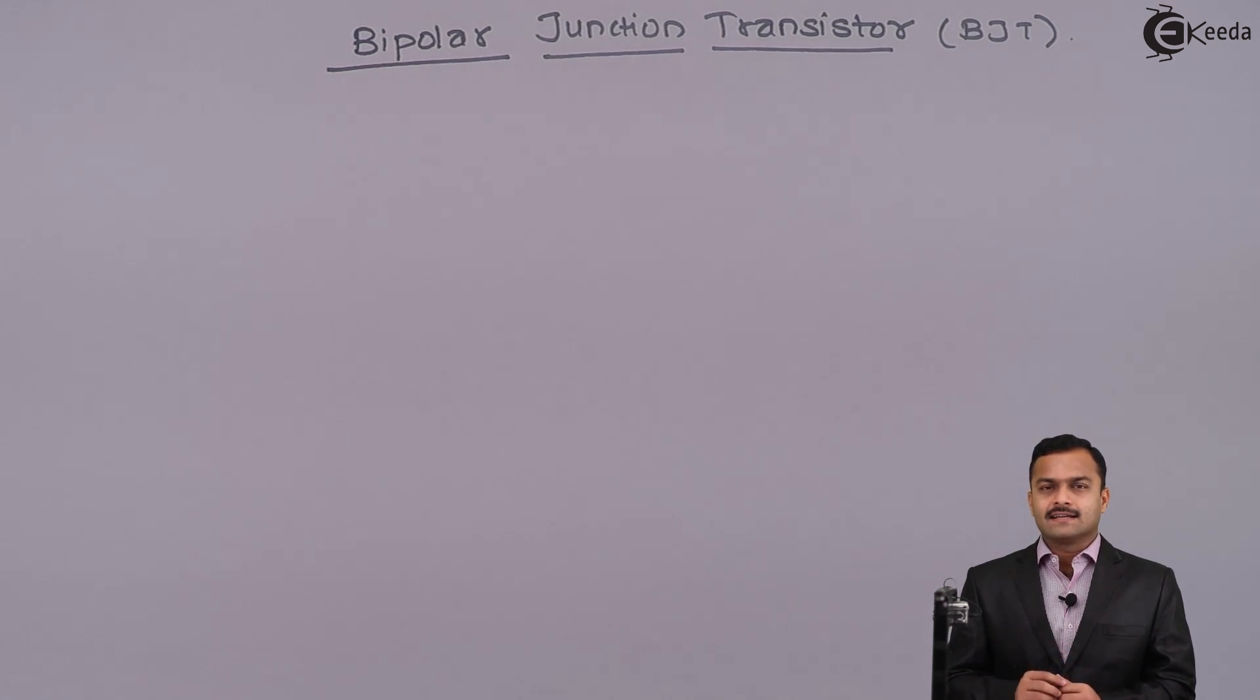So why is it called a transistor? For amplification purpose, we are passing a signal through a small resistance or low resistance path to high resistance path. That means we are transferring a signal from low resistance to high resistance. Hence, it is called transferring of resistance, or transistor.